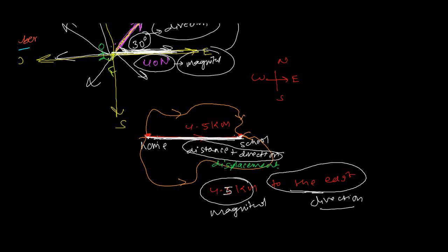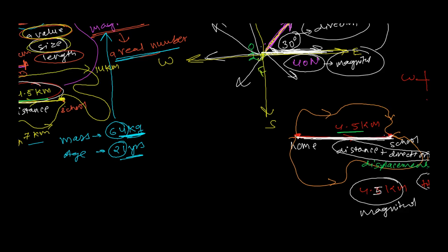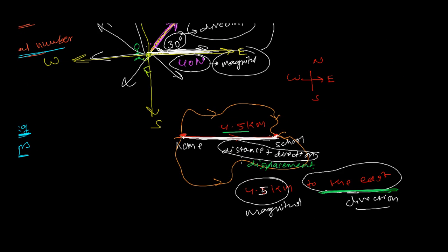The displacement between my home and school is 4.5 kilometers to the east — you must state the direction. But if someone just asks the distance between your home and school, you just say 4.5 kilometers. No matter whether it's east, west, southeast, or wherever, direction doesn't matter for distance. But whenever someone asks for displacement, you need to say '4.5 kilometers to the east' or whatever direction applies.